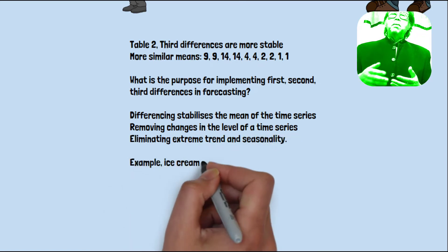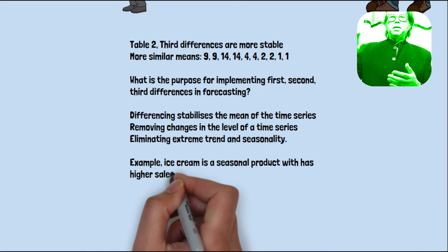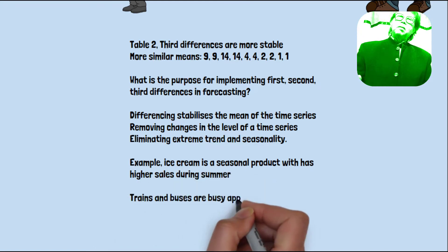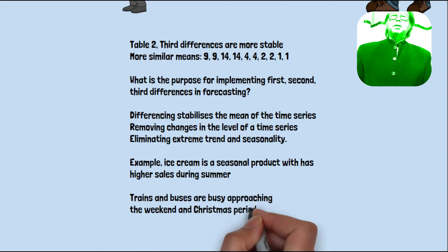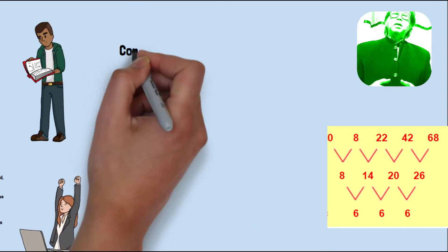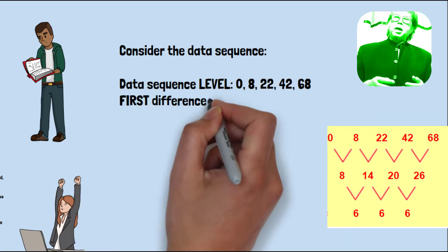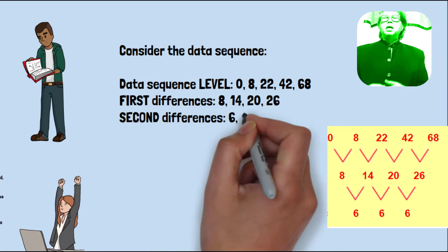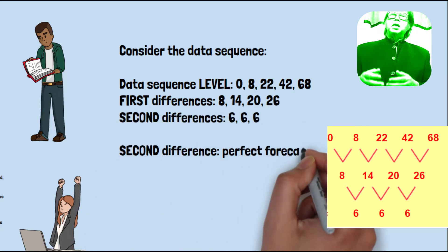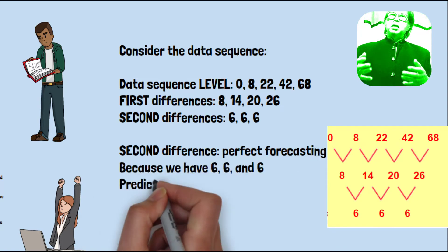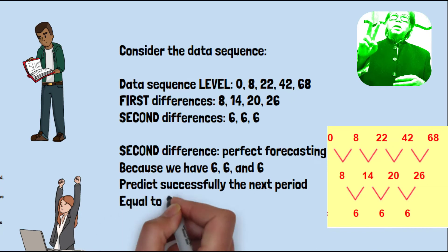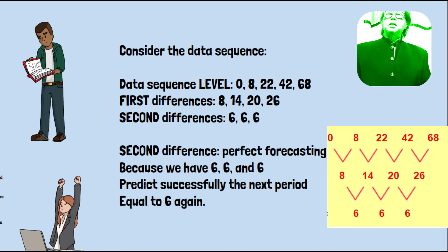For example, if you see ice cream, there is a seasonality. Summer, very busy. And another product maybe they are busy at the end of the year, Christmas. So if you look at the data sequence: 0, 8, 22, 42, 68. You take first difference: 8, 14, 20, 26. Second difference: 6, 6, 6. That's perfect for forecasting. That's stable. In this example, the second difference will be perfect for forecasting purposes because we have 6, 6, 6. So we can predict successfully the next period. It will be equal to 6 again, the difference.